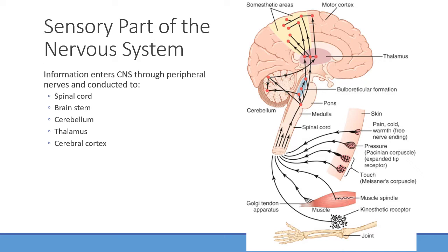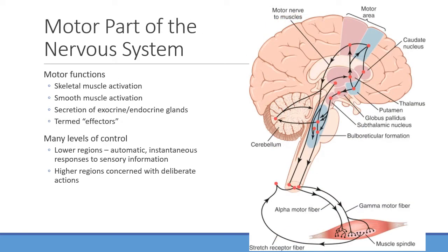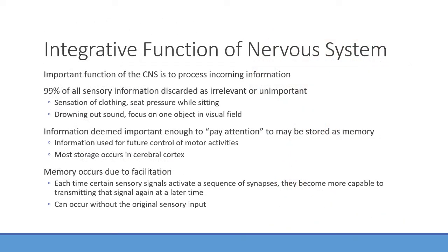Different parts of the nervous system handle motor functions like skeletal muscle activation, as well as endocrine and exocrine function — for example, the hypothalamus releasing hormones. A lot of lower brain function is subconscious control: waking, breathing, cardiovascular function. Higher regions of the brain, like the frontal cortex, handle more deliberate actions and decision-making.